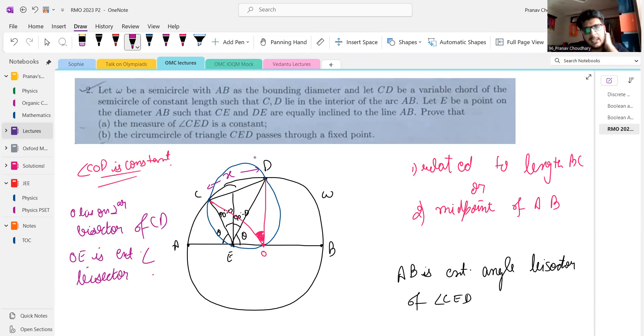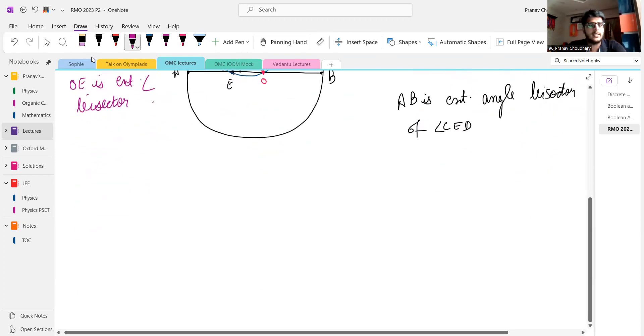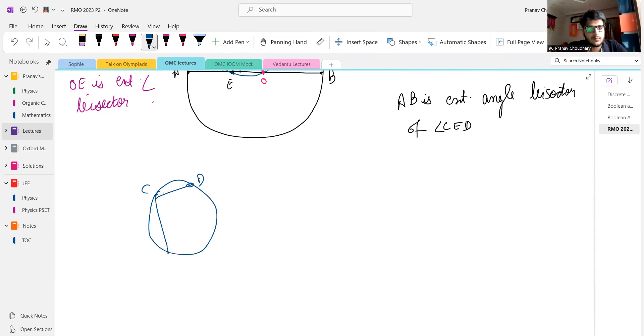It's well known that then CEOD is cyclic. For a proof of this, consider the angle CDE and draw the angle bisector and let it intersect at a point O dash. Then we have to show O'C equals to O'D.